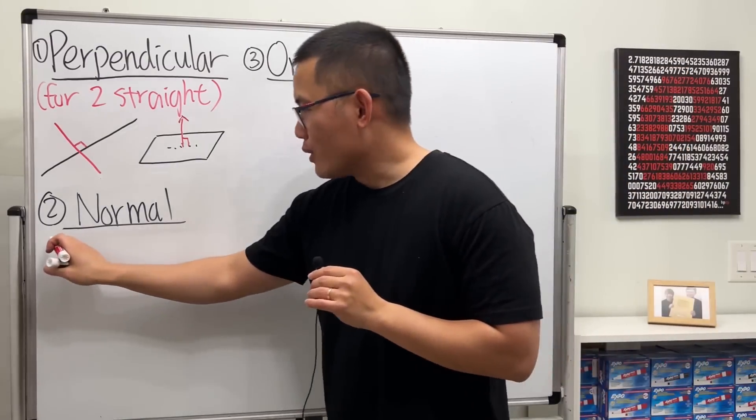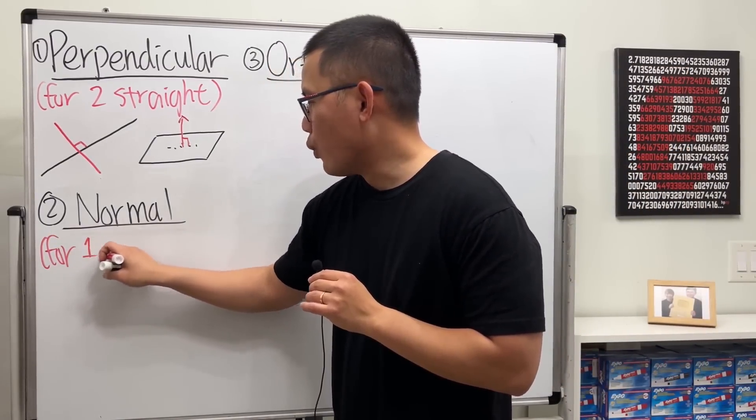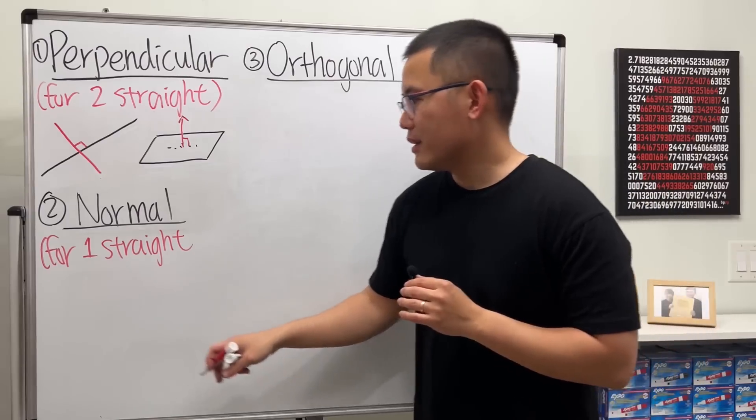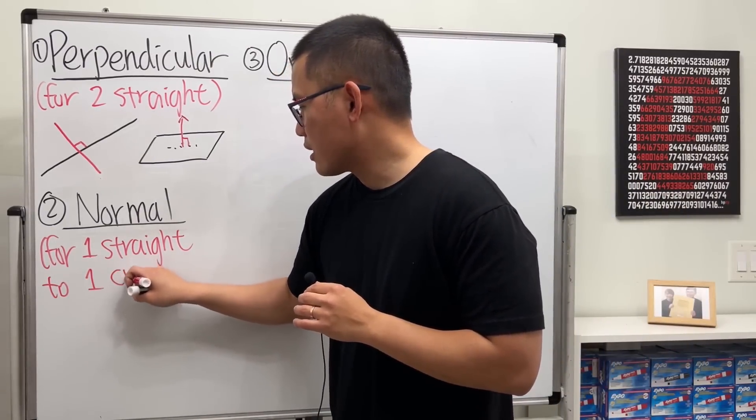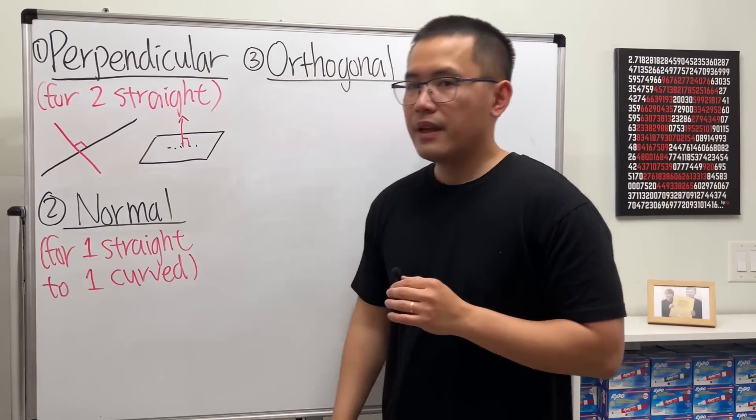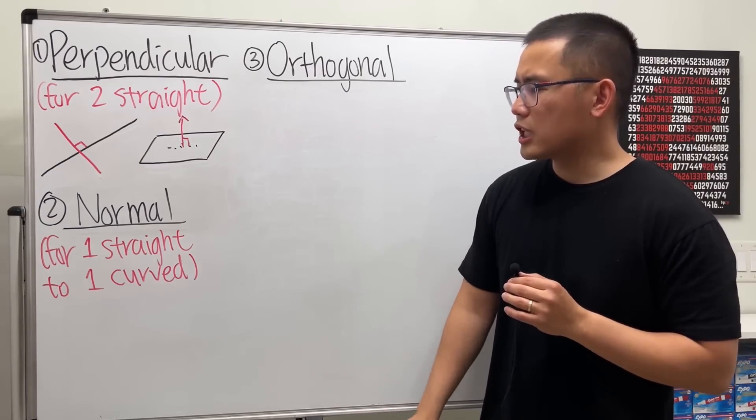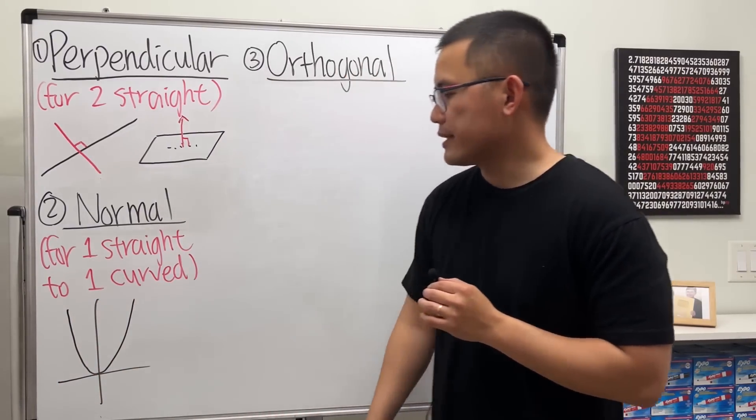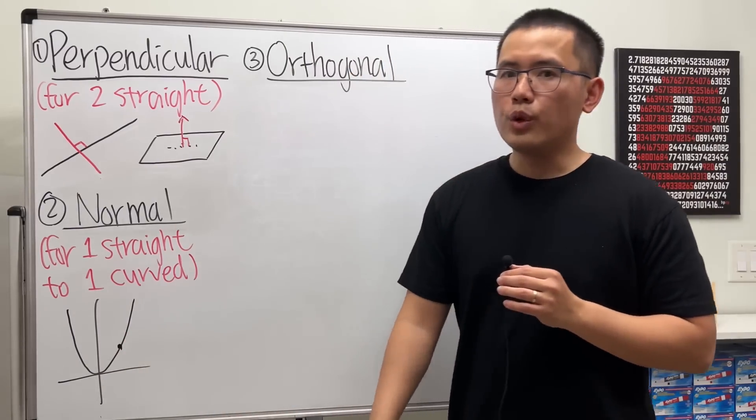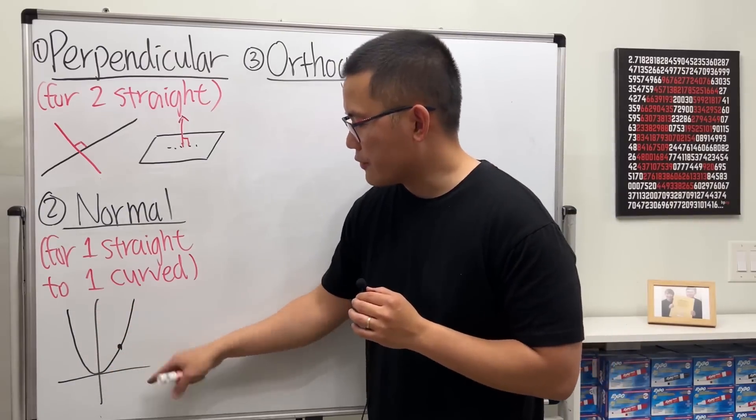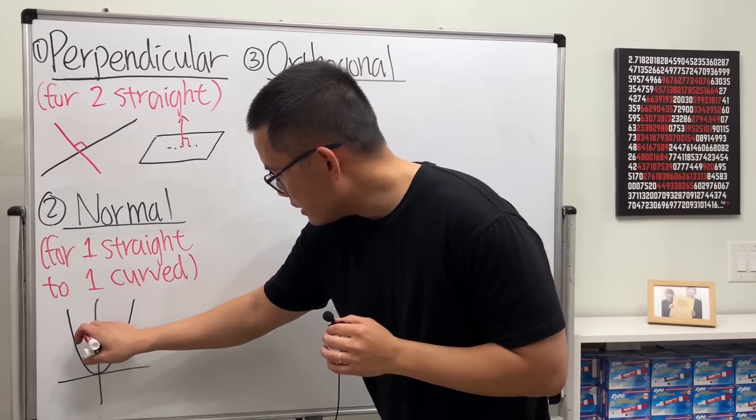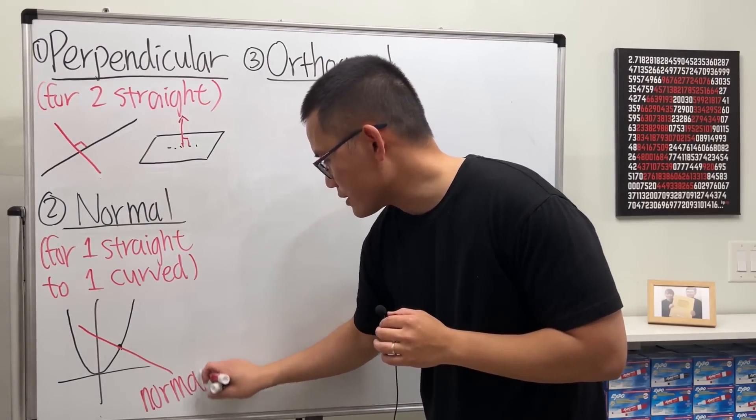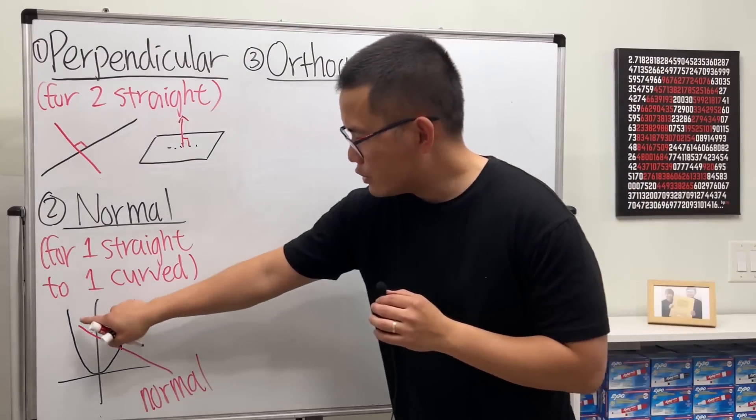Next, normal. I will say this is when we are talking about one straight thing or one flat thing to one curved thing. I think the first time that we encounter this term is in a Calc 1 class, where let's say we have a curve - let's say y equals x squared. And let's say we have this point. We want to find the line that's normal to this curve at this point. In that case, I will draw it for you. It will look something like this. This is called a normal line. And you have to do something with derivative.